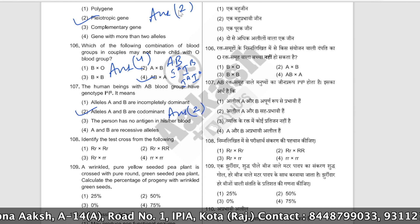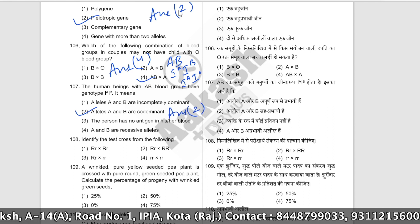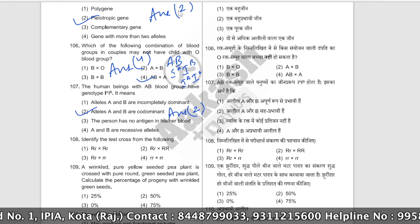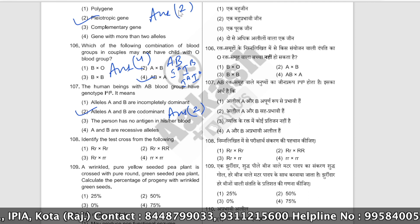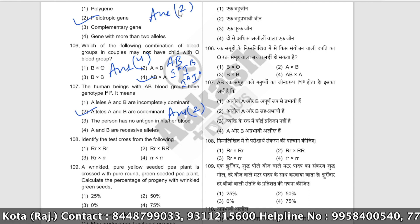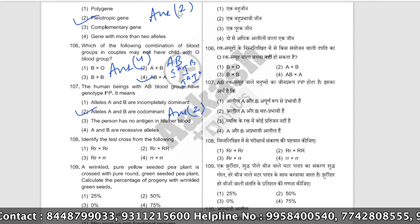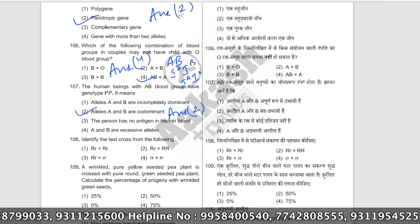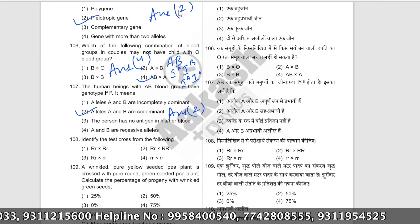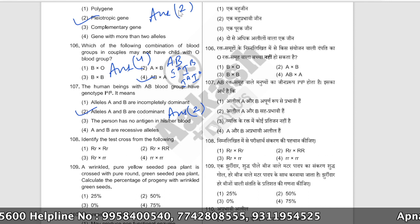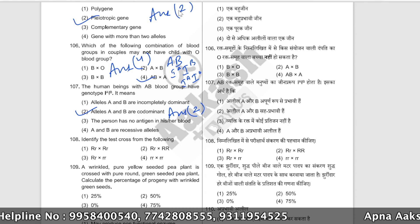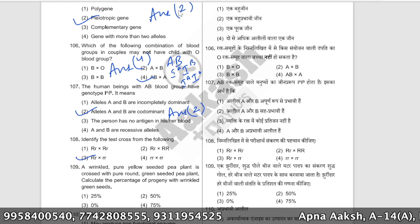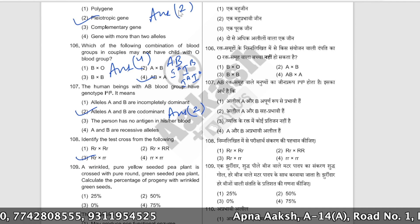Identify the test cross from the following. In a test cross, the F1 generation individual is crossed with the homozygous recessive parent. So the correct answer is option number three.